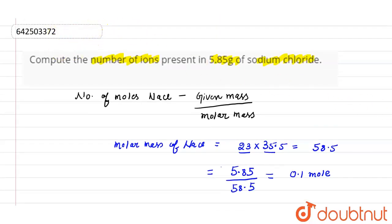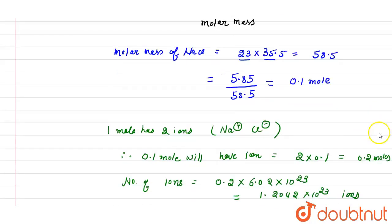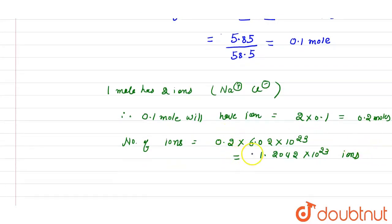So here in the question, 5.85 grams of sodium chloride will have 1.2042 into 10 to the power 23 ions. So this will be our answer.